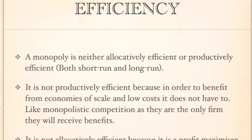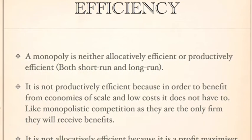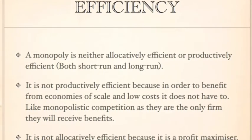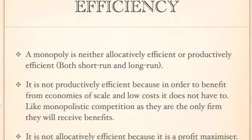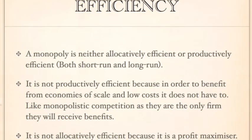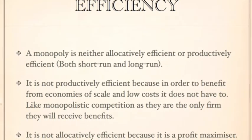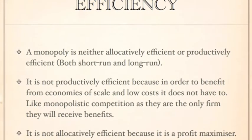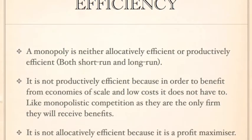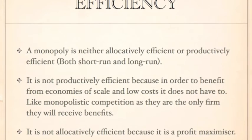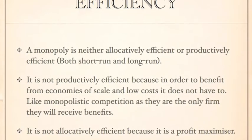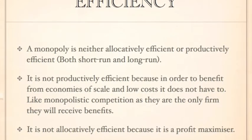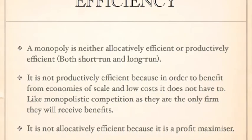Monopoly is neither allocatively efficient nor productively efficient in the short run and long run. It does not need to be productively efficient in order to minimise costs because it will already benefit from economies of scale and lower costs, and make large amounts of profits to cover these costs. As for allocative efficiency, if it was allocatively efficient it would not be making the profit that it could be making, hence why they are only allocatively efficient if government regulations require it.